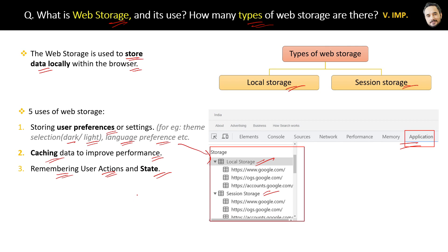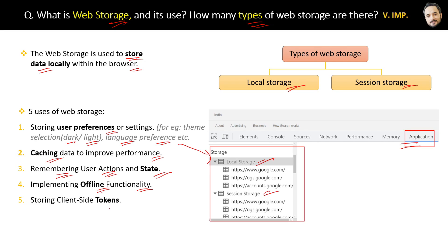Another advantage is implementing offline functionality. For example, while filling out a very long online form, if your internet goes off, developers can use web storage to save the data that was already filled by the user, so that it is not lost. This is the benefit of implementing offline functionality.